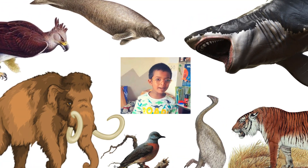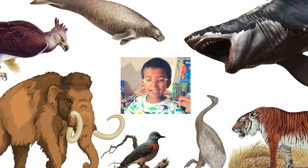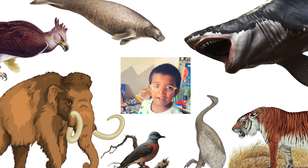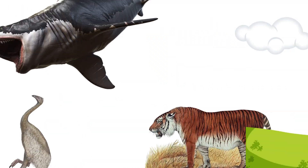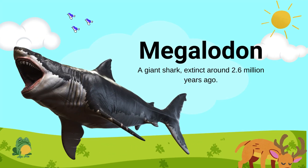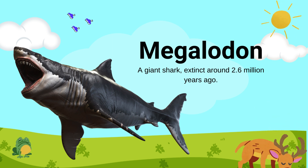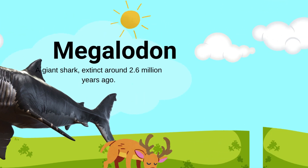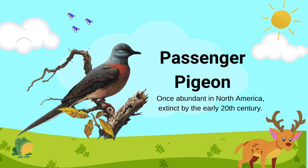Hello friends and welcome to my channel. Today I will tell you extinct animals' names with their pictures and their animation. Don't forget to subscribe. Megalodon: a giant shark, extinct around 2.6 million years ago. Passenger pigeon: once abundant in North America, extinct by the early 20th century.